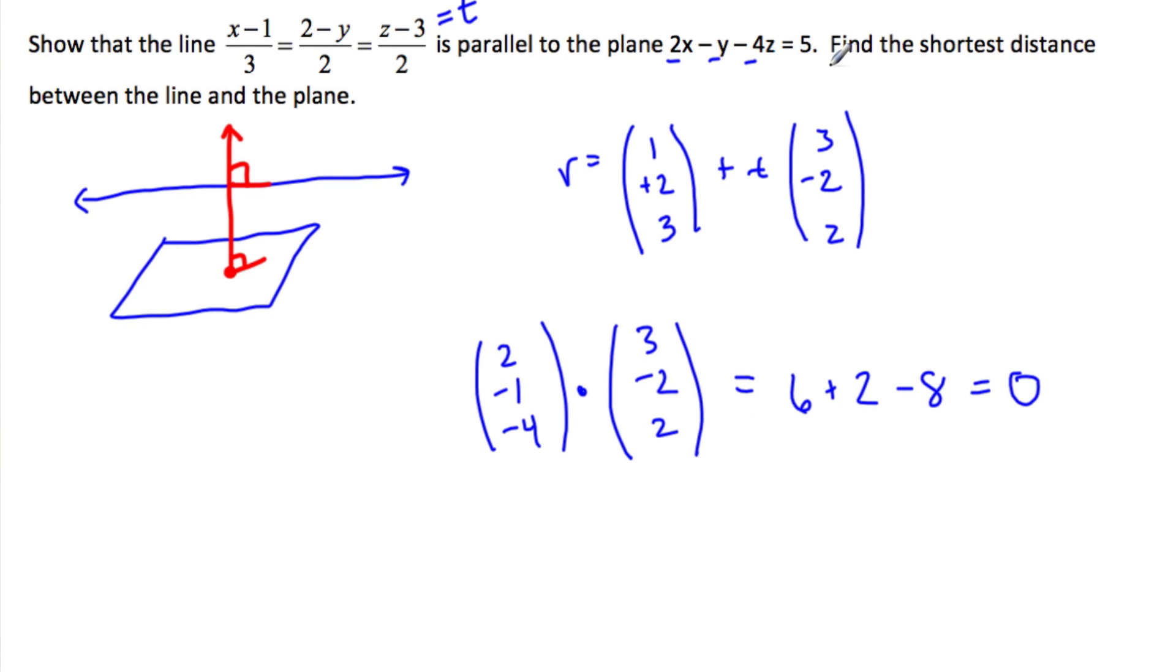Okay, so the second part is to find the shortest distance between the line and the plane. So the best way to do that is to take a point that's on the line. We have one, one, two, three. Take the direction of the normal vector, and then just find the value of t such that, find the length of this green vector, basically.